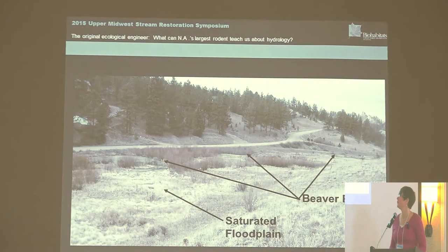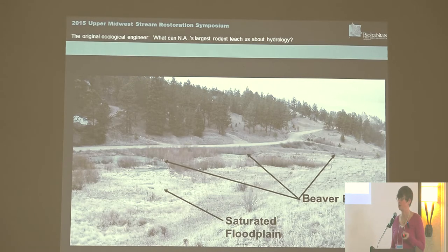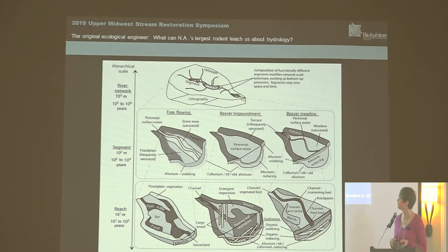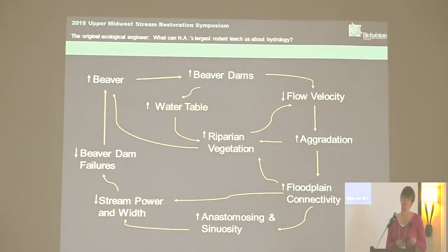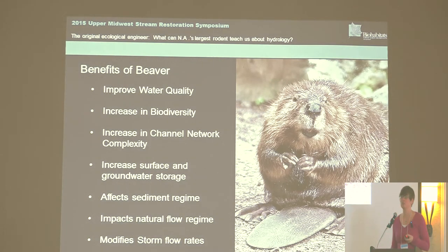Beaver modify a landscape by putting dams across it. They work along a network, using the whole valley and restoring the whole river system. Basically there are three main types of functions that come out of their altering a landscape: a free-flowing segment, a beaver impoundment, and a beaver meadow. All these systems working together provide a dynamic, complex network that builds on top of itself — a cyclic effect that keeps going and increasing the complexity of the landscape.